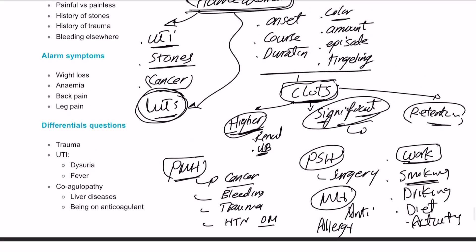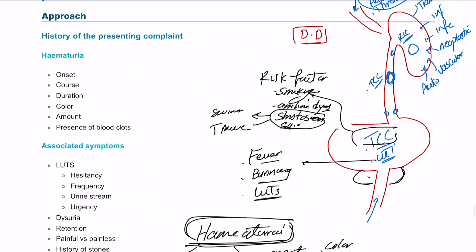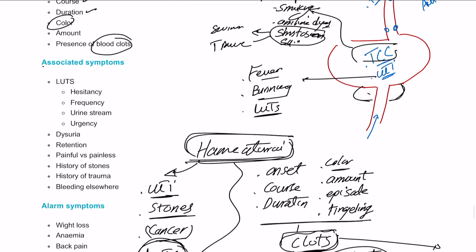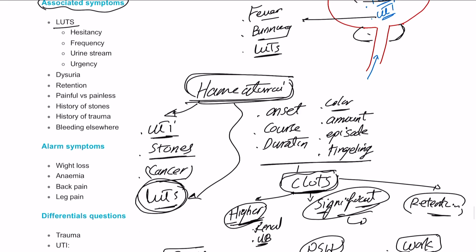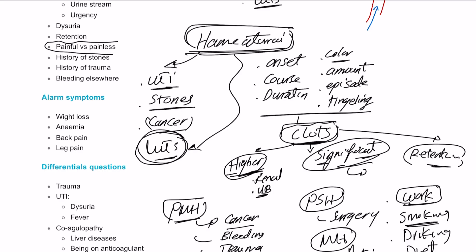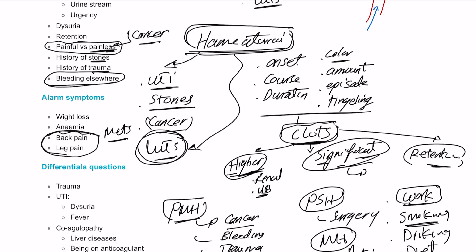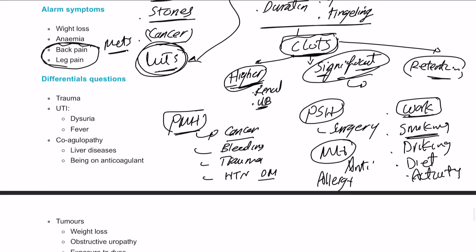Let's go through the notes quickly. Hematuria: onset, course, duration, the color, the amount, and presence of blood clots. Associated symptoms: lower urinary tract symptoms, dysuria, retention. Painful or painless hematuria — painless hematuria could be cancer; painful hematuria could be trauma or UTI. History of stones, history of trauma, and bleeding somewhere else for bleeding disorders. Weight loss, anemia, back pain, and leg pain — significantly important for bone metastasis. Differentials: trauma, UTI, coagulopathy.